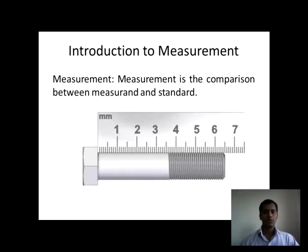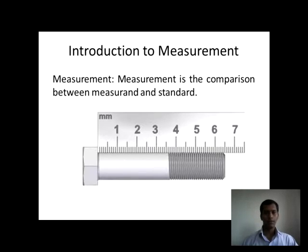Measurement consists of a comparison between a measured quantity and a standard one. Measurement means a quantity which is unknown. We have to measure that unknown quantity against a standard. A standard means a quantity which is constant throughout the universe. For example, we are considering a screw and comparing it with a standard steel rule. The steel rule is considered a standard, so we can say we are measuring the length of the screw by comparing it with a standard steel rule.